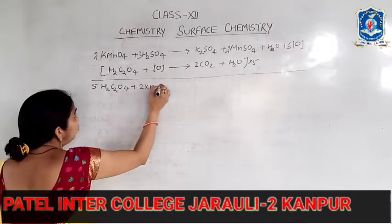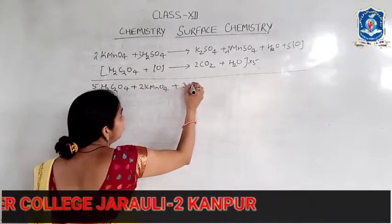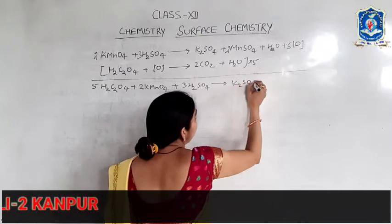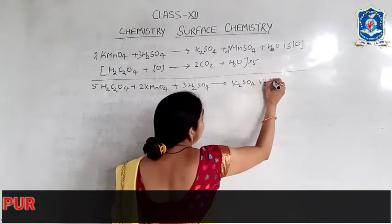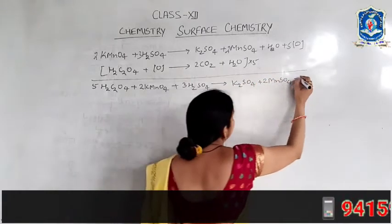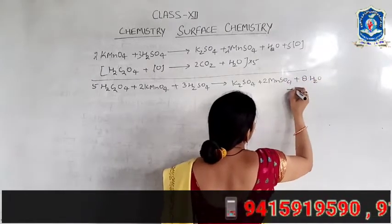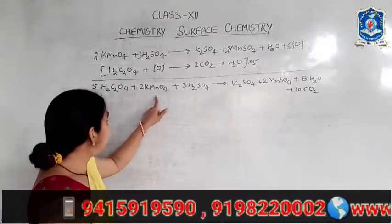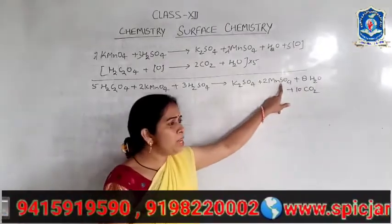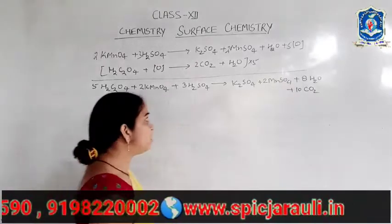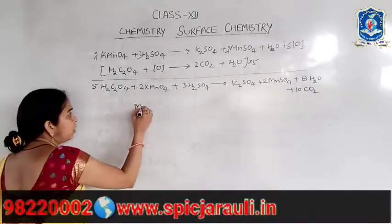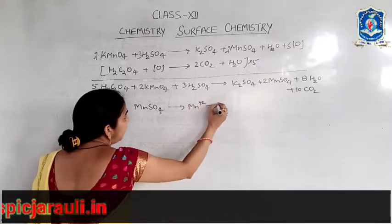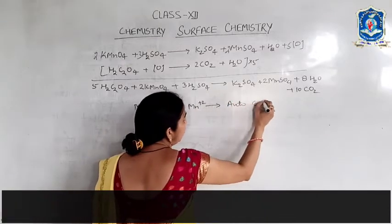Another example of auto-catalysis: KMnO4 reacted with H2SO4 gives K2SO4 plus 2MnSO4 plus 8H2O plus 10O. In this equation, when MnSO4 is obtained, the rate of reaction increases because Mn²⁺ ions act as an auto-catalyst.